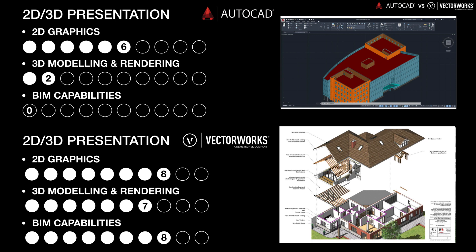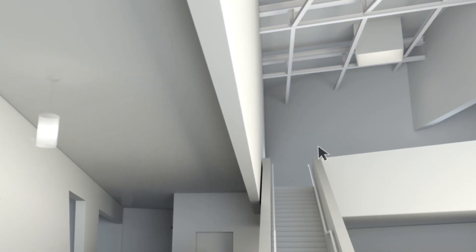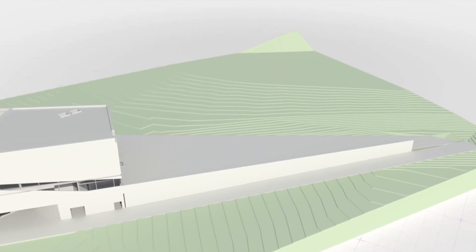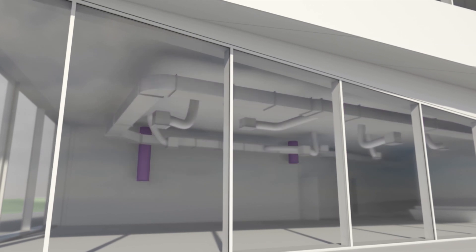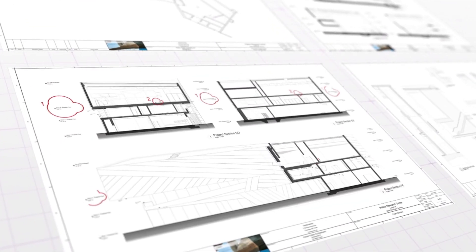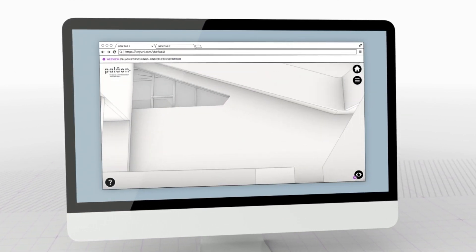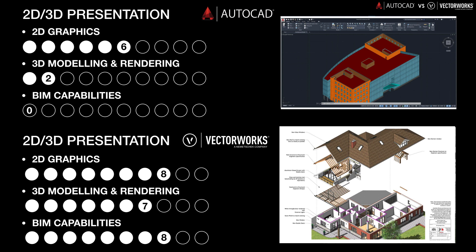With Vectorworks Architect it's possible to document the building in 2D, 3D, and using building information modelling processes. Vectorworks can import and export IFC files, and also offers direct Revit import and export in Vectorworks 2020. You can start from your 2D graphics, work up your 3D ideas, and then adopt a BIM methodology at any point in the workflow — or start in BIM from the beginning. That approachability and user-friendliness is one of the big advantages of Vectorworks BIM.